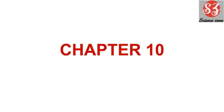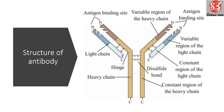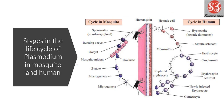Next is Chapter 10. The first important diagram is structure of antibody, and this is really very important. Structure of chromosome, structure of antibody, structure of sperm — these are all among the important diagrams you must do. Next is the life cycle of Plasmodium in mosquito and human — this will come as a long answer question: 'explain the disease malaria and the life cycle of Plasmodium in mosquito and human,' and you will need to draw this diagram in that answer.